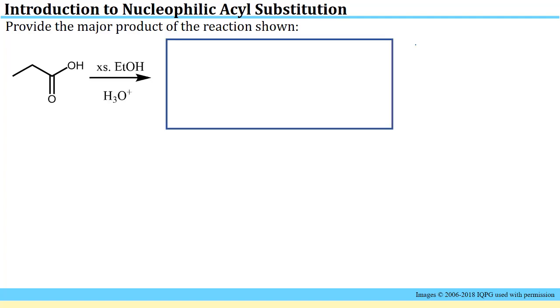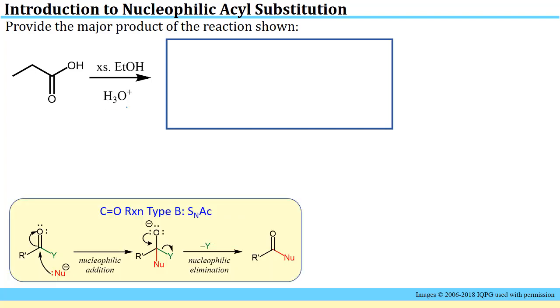Another type of nucleophilic acyl substitution covered in this lesson of the primer is the reaction of a carboxylic acid with an alcohol in the presence of an acid catalyst.